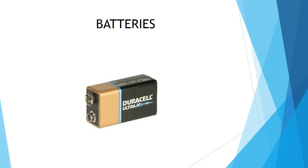The last component we're going to talk about today are batteries. This is a 9-volt battery, but there are lots of different batteries — AAA, AA, and a wide variety of others. This is what actually provides the power to the circuit. There's a positive and a negative side to the battery, and we need to hook those up in the correct order. For a 9-volt, the small connector is the positive side, and the larger one is the negative side, or ground.